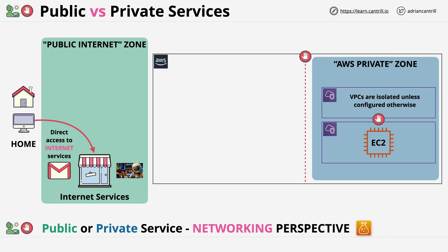Many people think AWS is architected with just two network zones — the internet and private zones. But there's actually a third zone: the AWS public zone. This runs between the public internet and the AWS private zone networks. It is not on the public internet, and it's not part of the public internet — it's a network which is connected to the public internet. This distinction might seem irrelevant, but as you learn more about advanced AWS networking, it really matters. The AWS public zone is the network zone where AWS public services operate from.